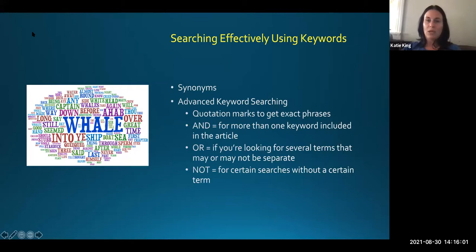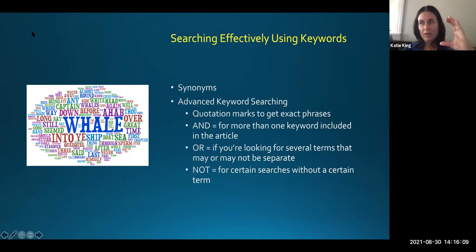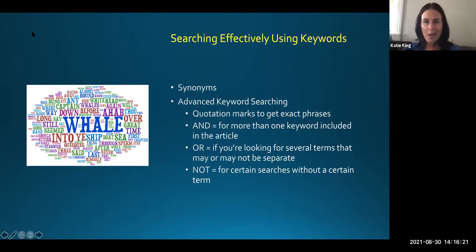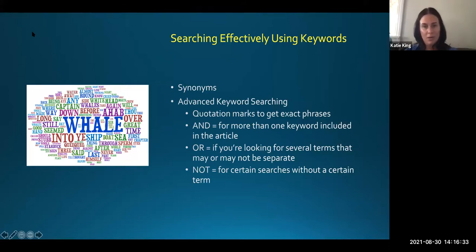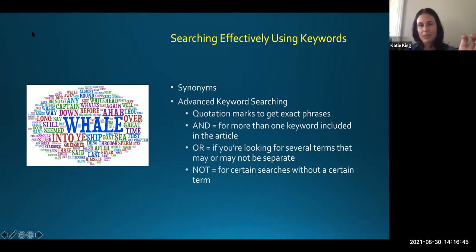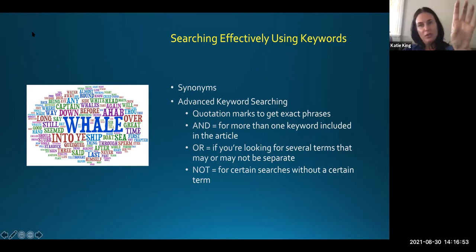When it comes to advanced keyword searching — use quotation marks around a phrase to get that exact phrase. So if you're looking up Kanye West, put it all in quotation marks so you don't get articles on the wild, wild west. If you put AND into a keyword search, it's for more than one keyword included in the article. If you put OR, it's when you're looking for several items that may or may not be separate. And when you put NOT — like West NOT Kanye — it looks for terms with the word West without those other keywords in it.